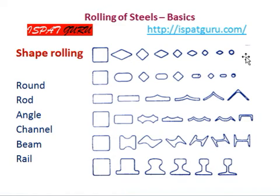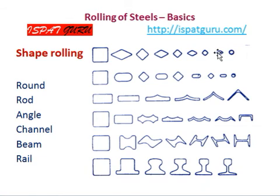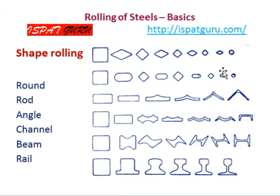For shape products, the shape is obtained step by step in a number of passes — the starting material is slowly changed to the final product. A few shapes are shown but the actual number of passes is many more. In a wire rod mill it may be as high as 25 passes. One can see how the shapes are being developed — rail, I-beams, channel, angle, wire rods, and rounds. There are a large number of passes for the development of shapes.